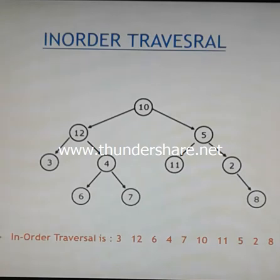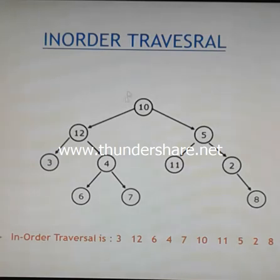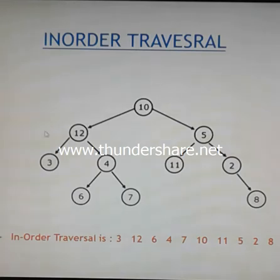The first traversal scheme is known as in-order traversal. Here we are taking an example where the root node is 10, with some nodes on the left-hand side and the right-hand side. In in-order traversal, we first traverse the left subtree, then process the root node, and after that we process the right subtree. So first we will visit the left subtree and apply the in-order scheme again.